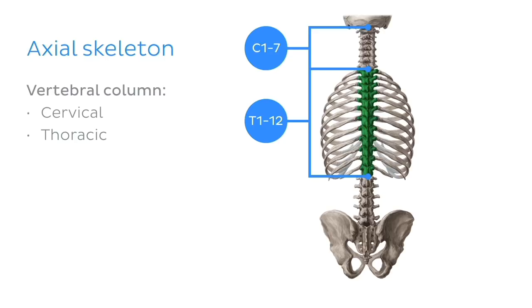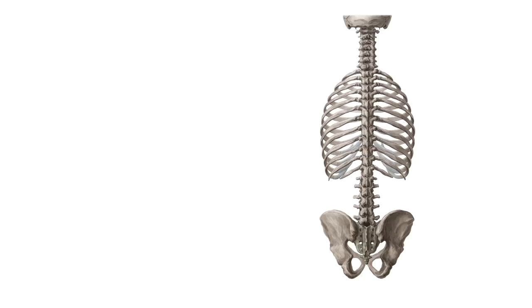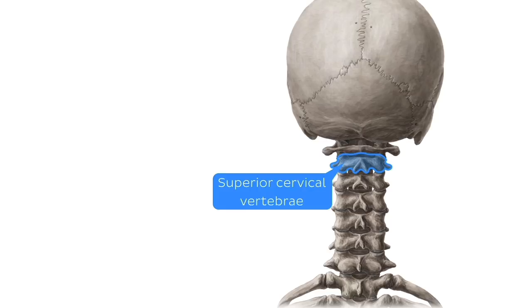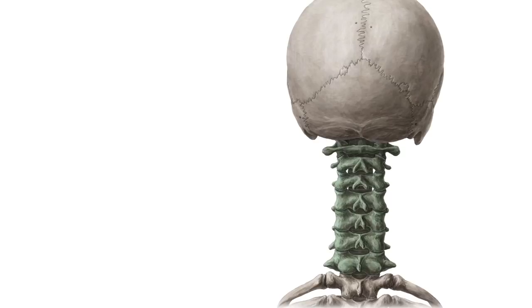Since we're looking at the craniovertebral ligaments, our focus is going to be on the superior aspect of the vertebral column, where the cervical vertebrae meet the cranium. Let's have a closer look at the seven cervical vertebrae highlighted in green, but note that it's the first two that we are particularly interested in today.